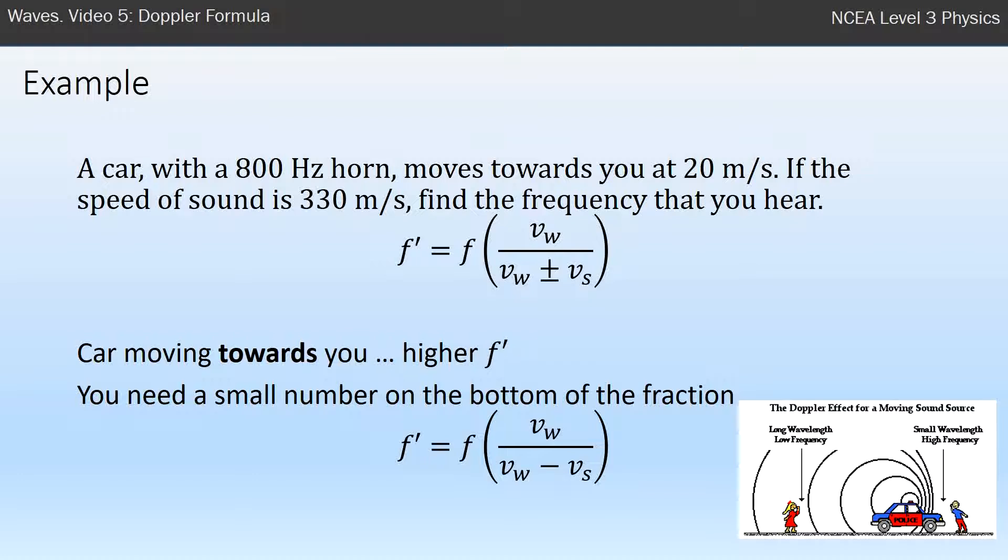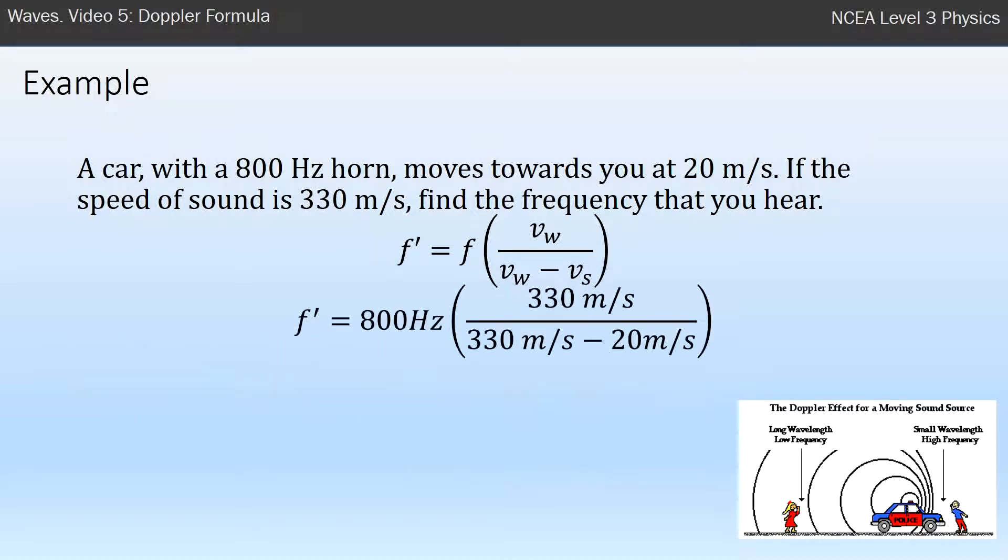A small number is created with the minus on the fraction, so that's the formula I'm using. Then just put the numbers in. I've got my 330 as my velocity of my wave. 20 m/s was my speed of the car.